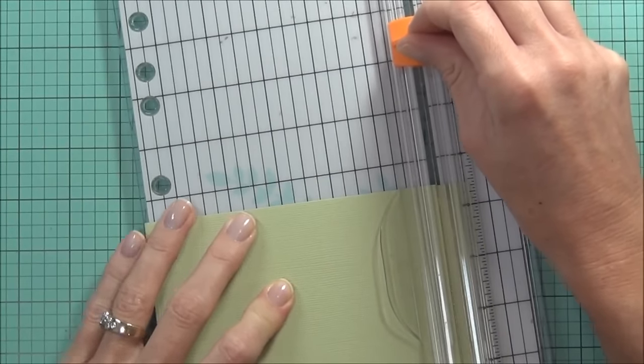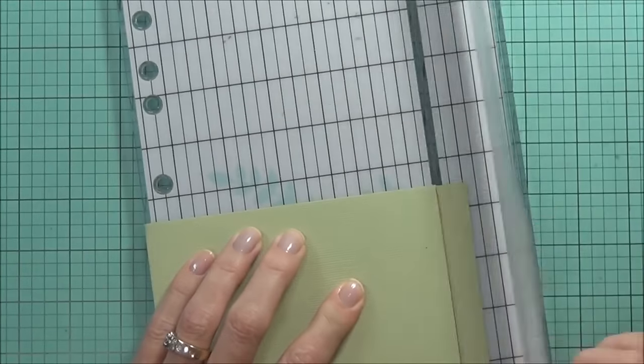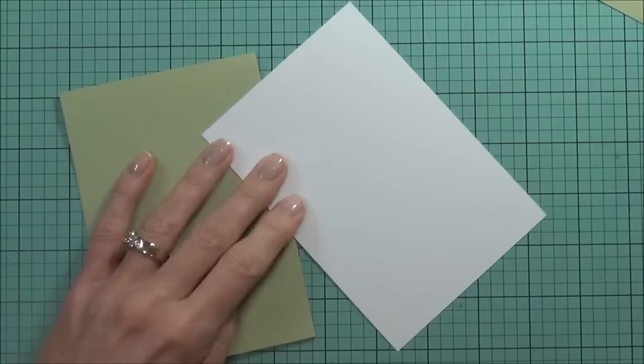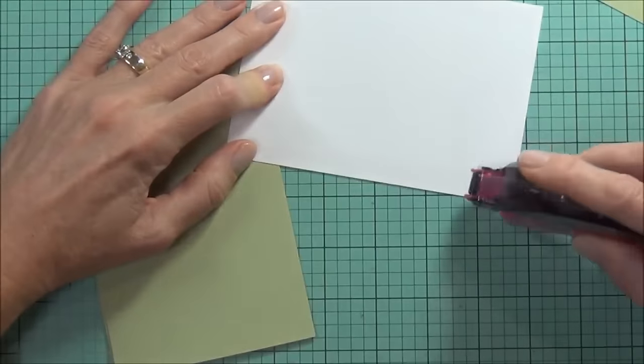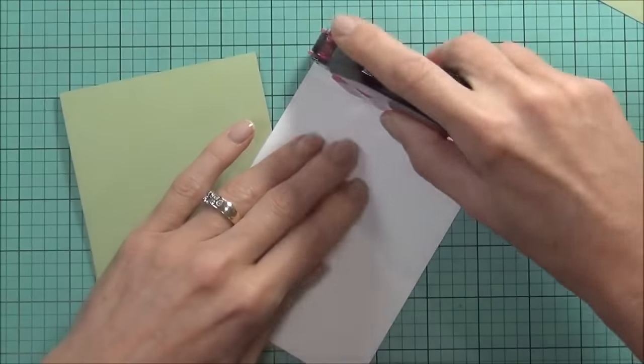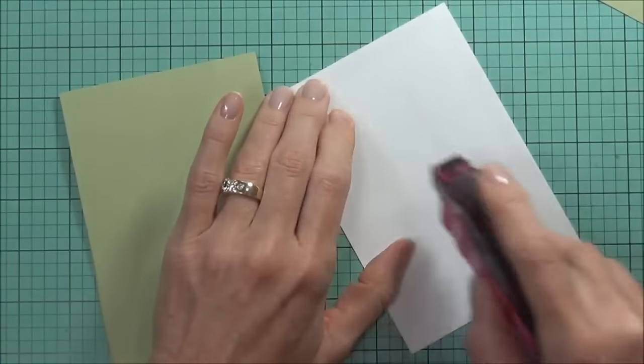What I decided then was I thought it looked really pretty with a green card base. This is an American Crafts cardstock called Mint. I'm just using my stamp runner to apply some dry adhesive to the front of my card.